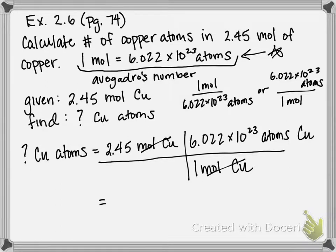And to solve this problem we simply multiply 2.45 moles of copper times the 6.022 times 10 to the 23rd atoms. We can do our division on the bottom, but it's not going to change anything since the only number on the bottom is 1.